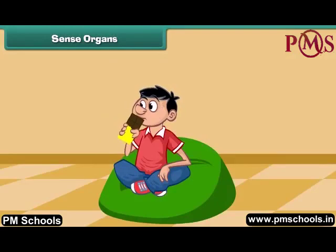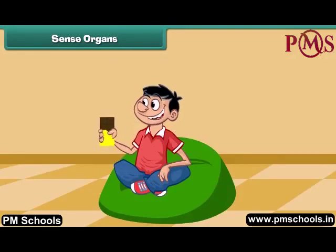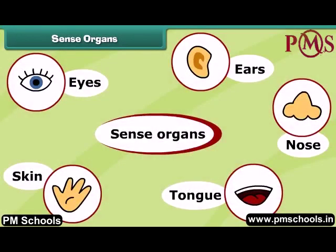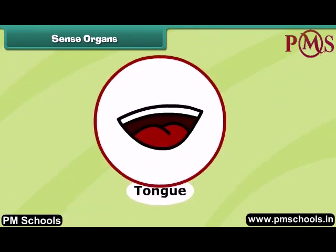We all like to eat chocolate because it's good in taste. But which sense organ is responsible for it? That organ is our tongue, which is helpful to chew, swallow, talk and sing. We can also taste various foods with the help of our tongue.